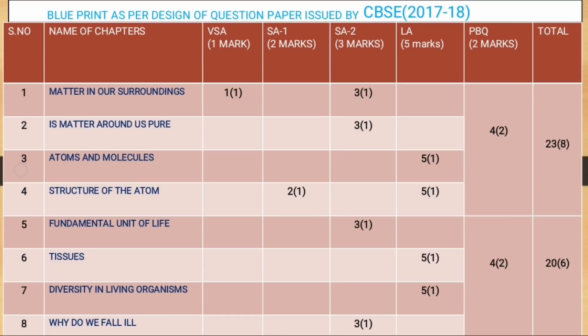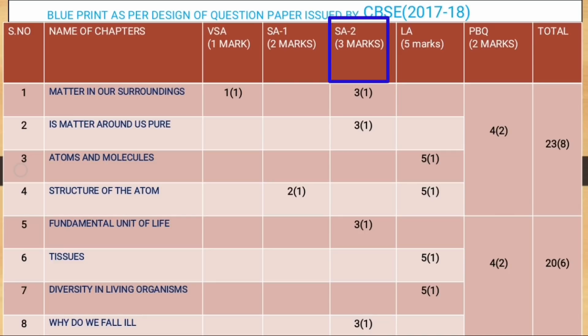Hello students, this is the blueprint as per the design of question paper issued by CBSE for the 2017-18 session. There will be five types of questions: first, very short answer having one mark; second, short answer type 1 having two marks; and third, short answer type 2 having three marks; and long answer type having five marks.